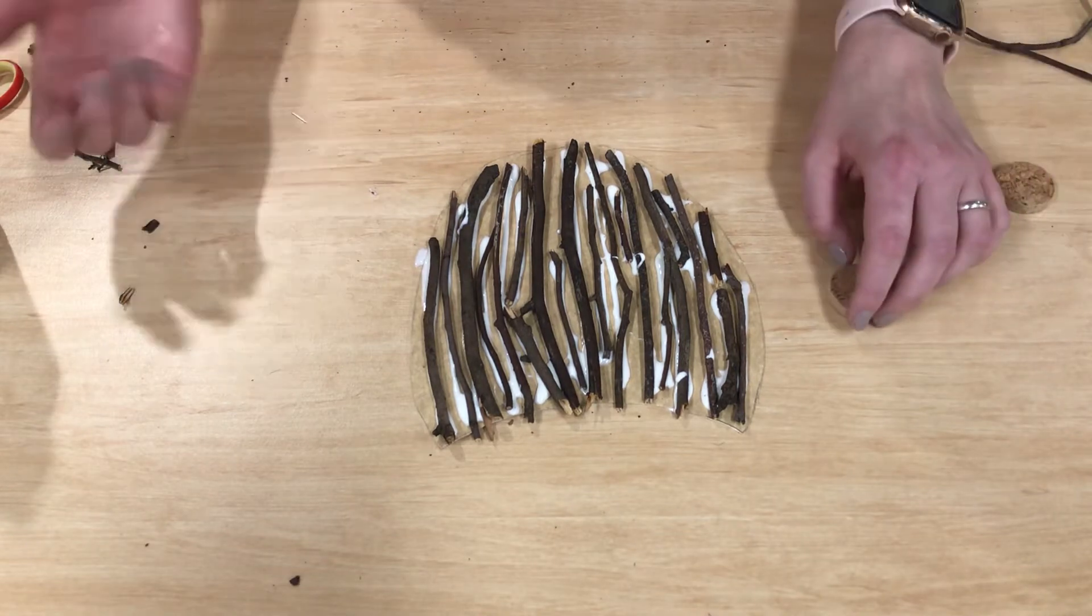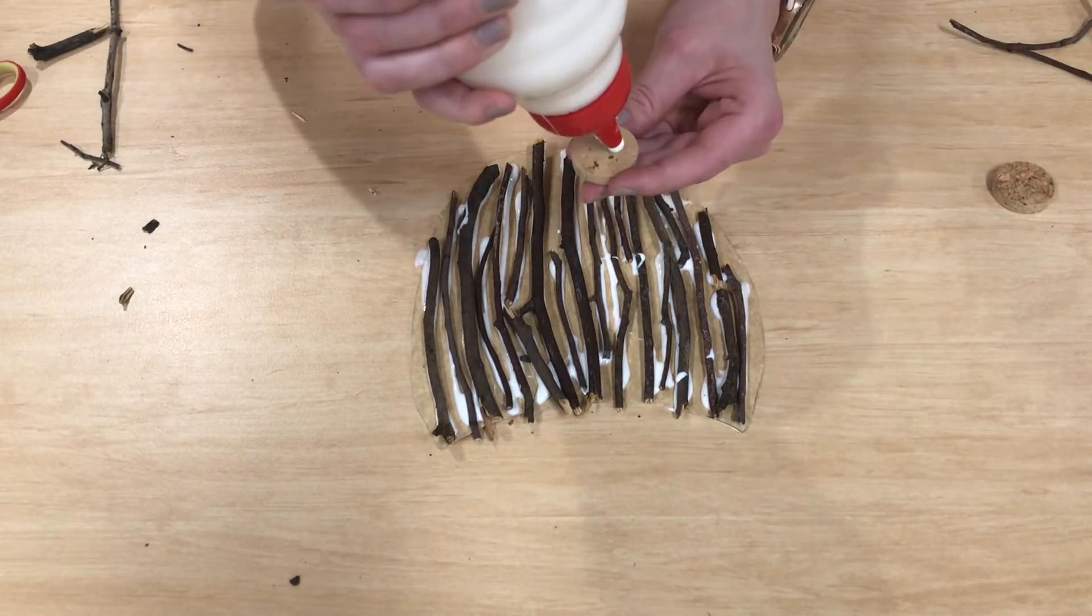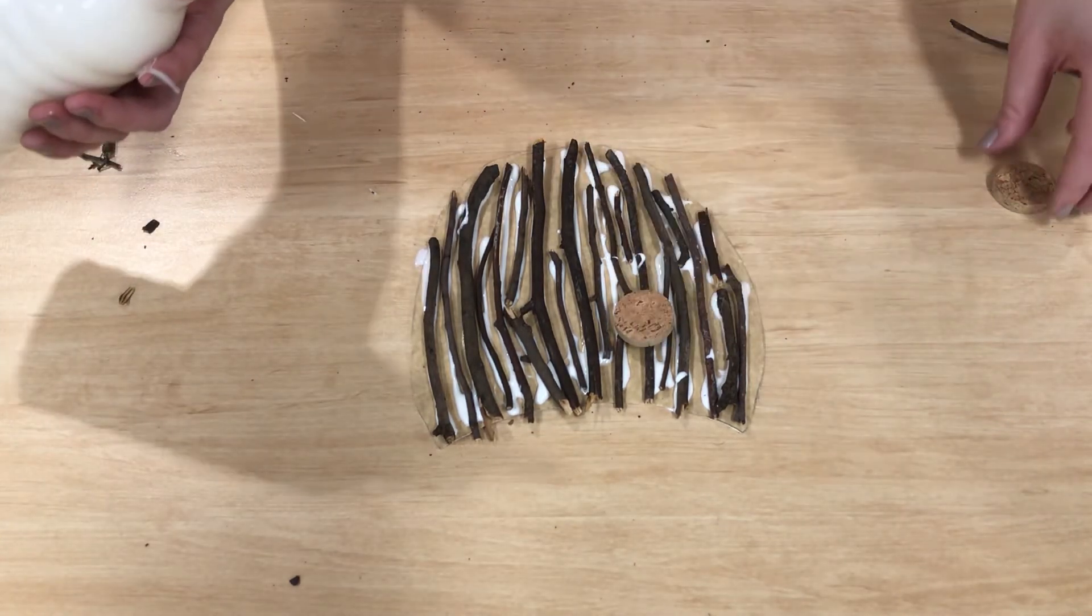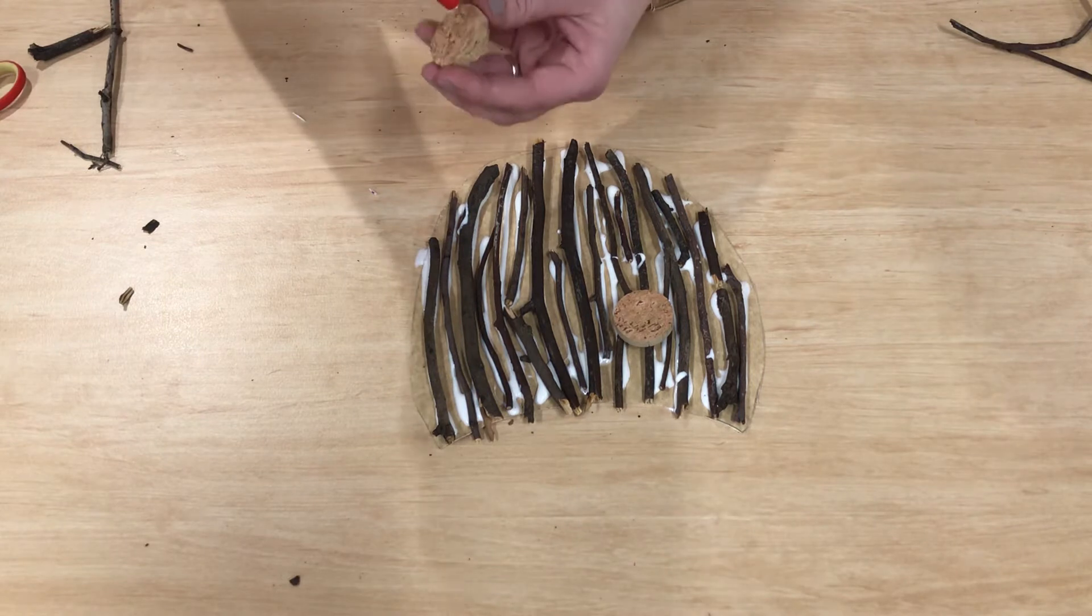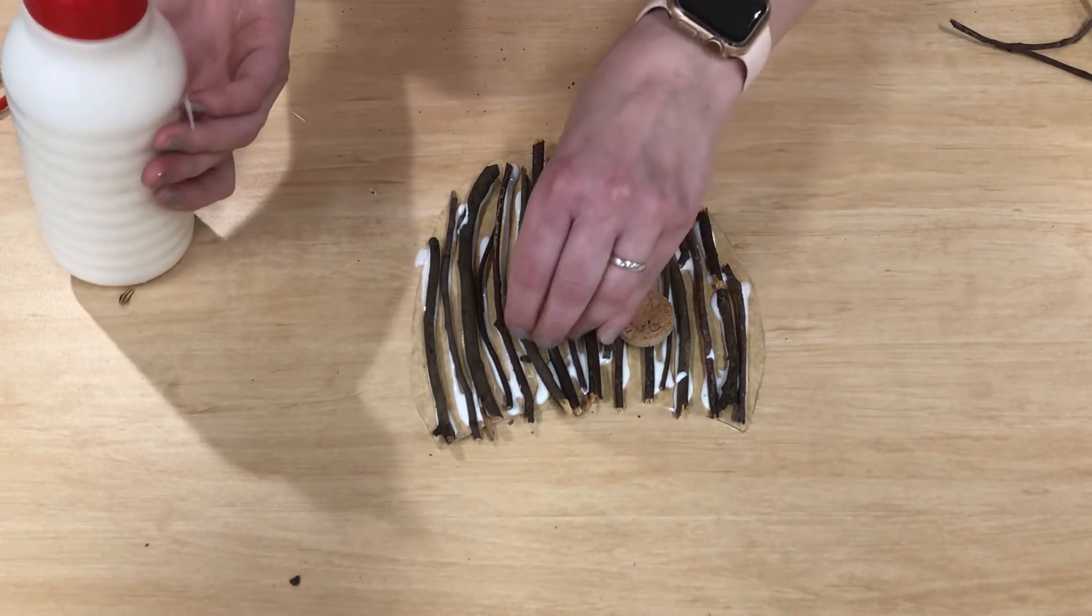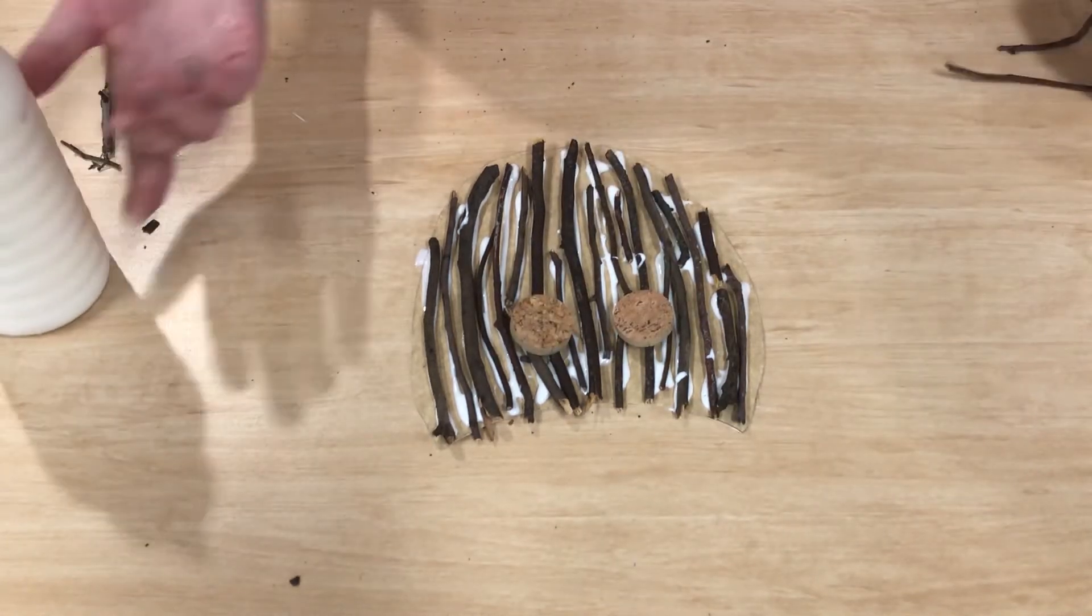Okay, so for our next part in making our owl, we're going to stick on some eyes. Now as you can see, I've just used a couple of bits of cork that I had lying around. But you could use some bottle tops if you've got them or even cupcake liners, patty pan liners.